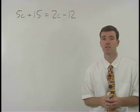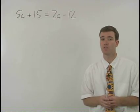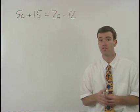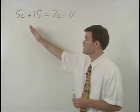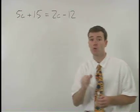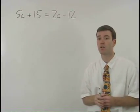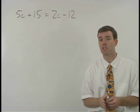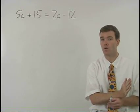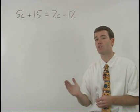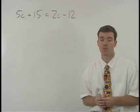Here our goal is basically the same as it was in the previous two examples. Since our variable in this case c appears on both sides of the equation, we want to put our c terms together on one side of the equation and put our numbers together on the other side.